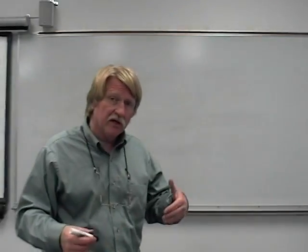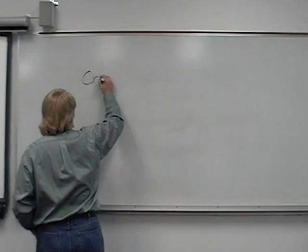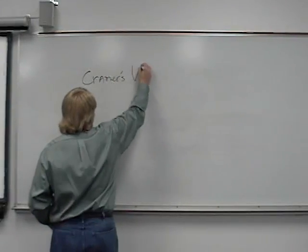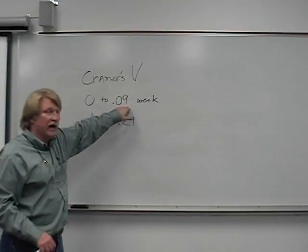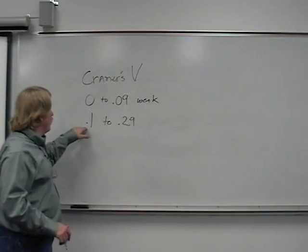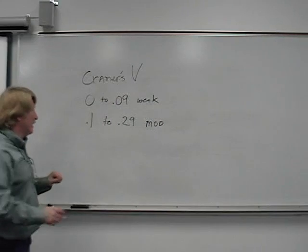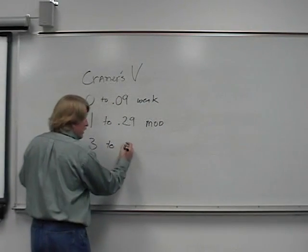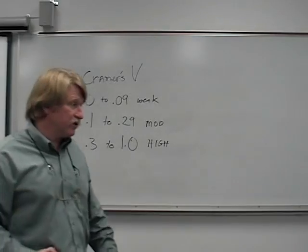Cramer's V is similar to R but it's for measures using cross tab data only. It is interpreted differently than an R. A Cramer's V can run from 0 to 1.0. If you get a Cramer's V of 0 to 0.09, that's a weak association between the two variables. A 0.1 to 0.29 is a moderate association. A 0.3 to 1.0 is a high or strong measure of association between two variables.